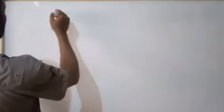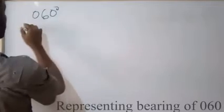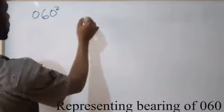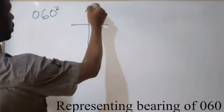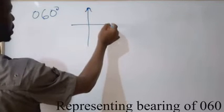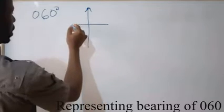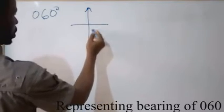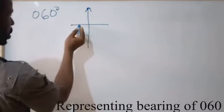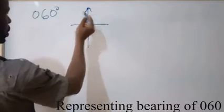Let's start by representing some directions on the board. Between north and east it's 90 degrees; between east and south it's 180 degrees; from north going round to west it's 270 degrees; and the full circle is 360 degrees.